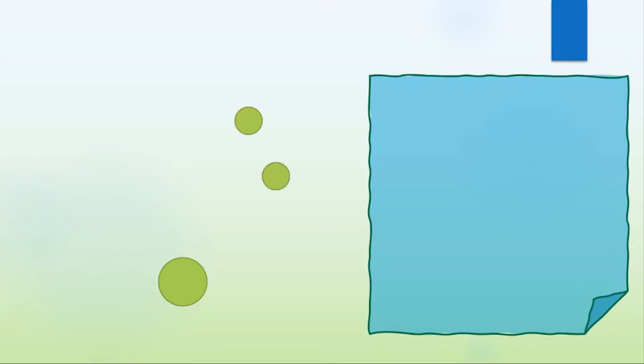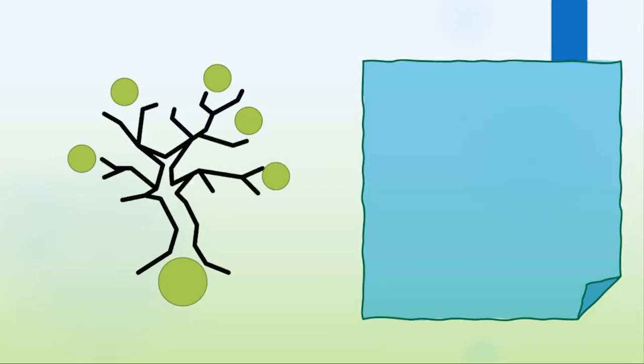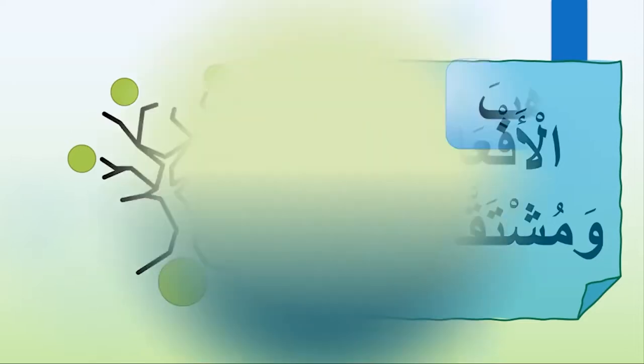We have learned that each verb in Arabic has what we call a root verb, and from this root comes all other forms. It's just like a tree. And this is what we call الأفعال ومشتقاتها. So let's see مشتقات الفعل ذهب.